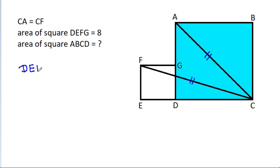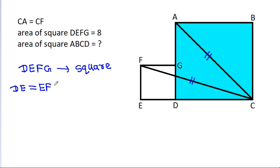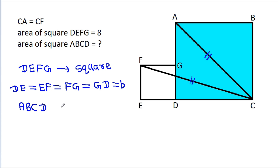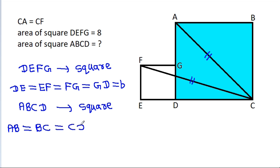DEFG is a square, so DE is equal to EF, equal to FG, and equal to GD. ABCD is also a square, so AB is equal to BC, equal to CD, and equal to DA.